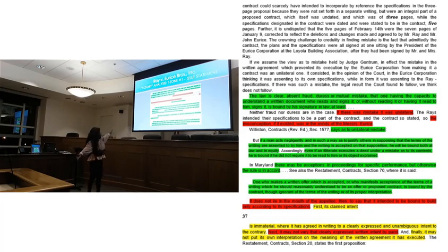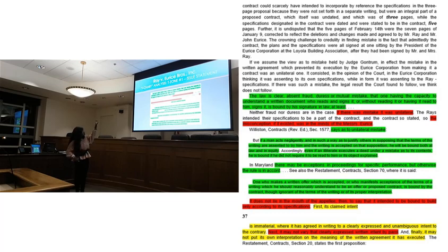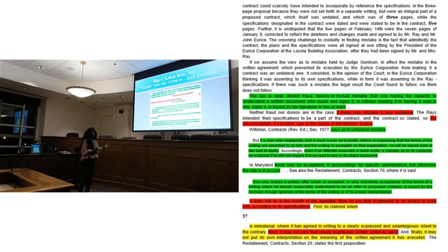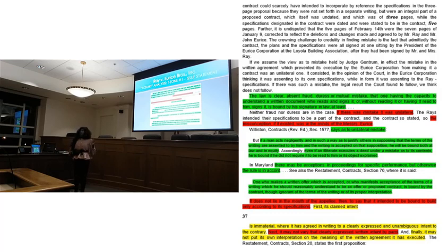The court starts broadly: the law is clear that absent fraud, duress, or a mutual mistake, one having the capacity to understand a written document who reads and signs it — or without reading it, signs it — is bound by that. The court then checks: was there any fraud? No. Any duress? Nobody held him down. So the court determines the key question is whether there is a mutual mistake.